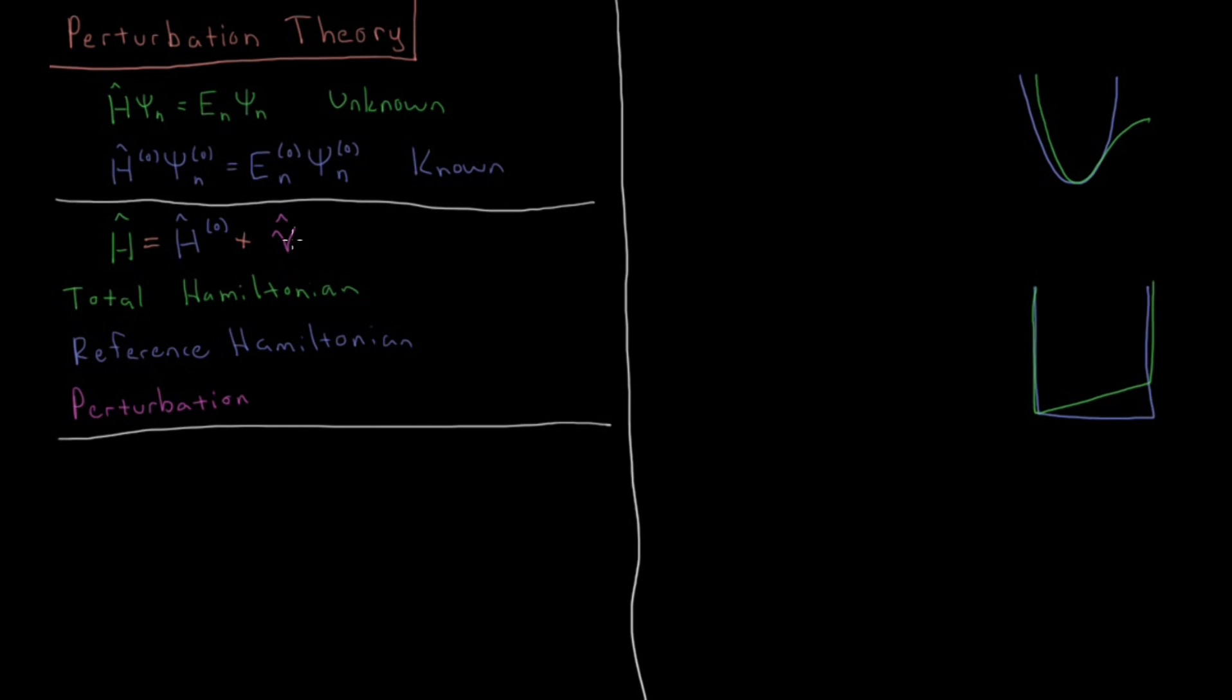Or some addition to usually the potential energy V here. And I'm using the symbol, kind of this curly V here, so that we don't get that confused with the potential energy operator. Just remember that the perturbation is kind of this curly script V, and the potential energy operator is just a standard Roman style V.